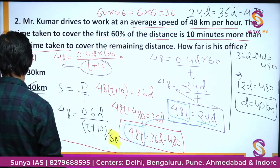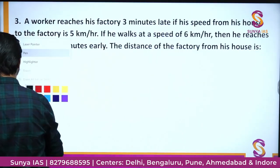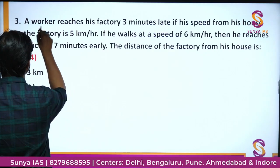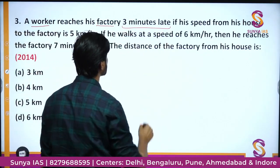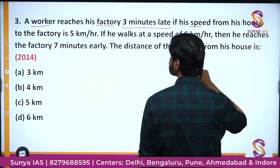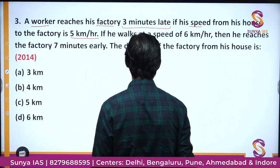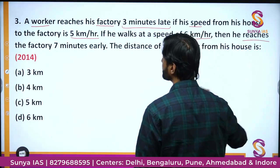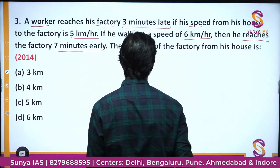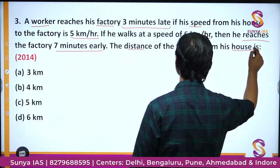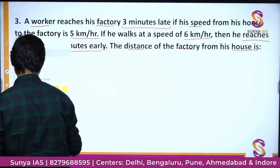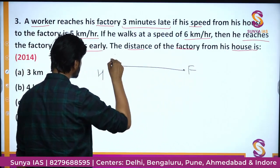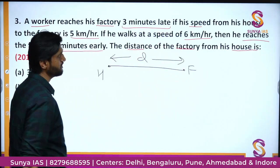Moving on — this is a question based on simple speed, distance and time. A worker reaches his factory 3 minutes late if his speed from his house to the factory is 5 kilometers per hour. But if he walks at a speed of 6 kilometers per hour, he reaches the factory 7 minutes early. How far is the factory from his house? Let me draw a simple diagram: here is the house and here is the factory. Let us assume the distance to be D.